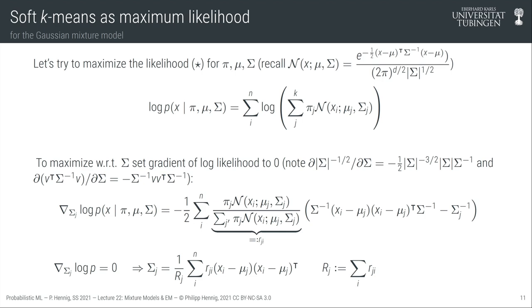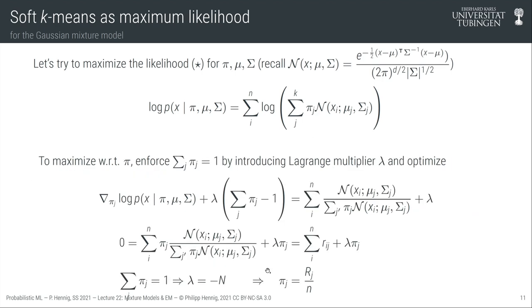So if we had these r_{ji}, we could estimate both mu and sigma. Now what about pi? The situation is similar but with an extra caveat: the pi_j weights are supposed to be elements of a probability distribution, lying on the simplex — their sum must equal one and all values must be non-negative. To enforce this constraint, we introduce a Lagrange multiplier.